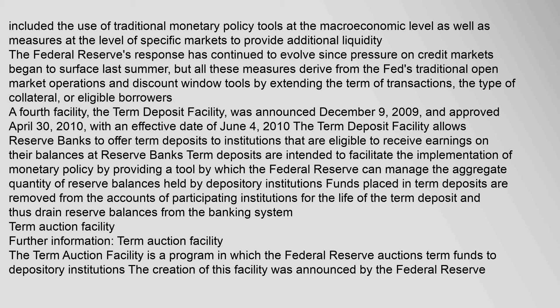A fourth facility, the Term Deposit Facility, was announced December 9, 2009, and approved April 30, 2010, with an effective date of June 4, 2010. The Term Deposit Facility allows reserve banks to offer term deposits to institutions eligible to receive earnings on their balances at reserve banks. Term deposits are intended to facilitate the implementation of monetary policy by providing a tool by which the Federal Reserve can manage the aggregate quantity of reserve balances held by depository institutions. Funds placed in term deposits are removed from the accounts of participating institutions for the life of the term deposit, thus draining reserve balances from the banking system.